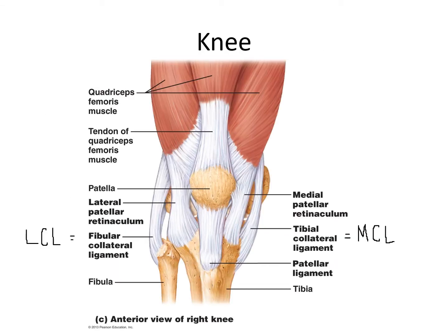Looking at this from an anterior perspective — so this would be the front of the tibiofemoral joint, the knee joint — here we have the patellar ligament. Technically, a ligament connects bone to bone. On the model, it shows this as one continuous structure that spans across the patella and grades into the tendon, which connects bone to muscle. This is technically the tendon of the quadriceps femoris muscle. Our patellar ligament connects the patella to the tibia.